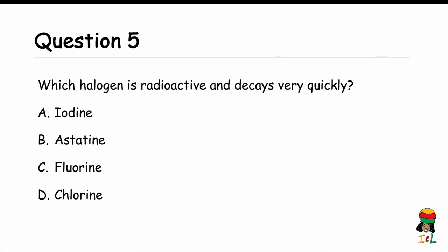Question 5: Which halogen is radioactive and decays very quickly? A. Iodine. B. Astatine. C. Fluorine. D. Chlorine. The answer is B — Astatine.